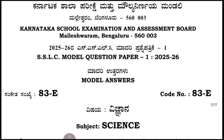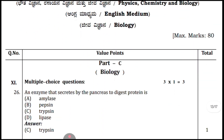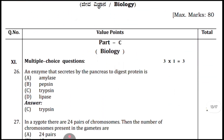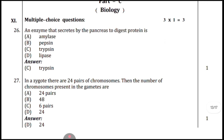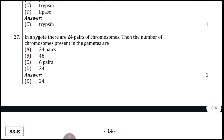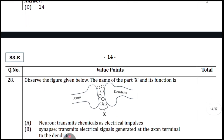Coming to the biology section of the Science question paper 2025-26. Multiple choice: the enzyme secreted by the pancreas to digest protein is trypsin. In a zygote there are 24 pairs of chromosomes; therefore the number of chromosomes present in the gametes is 24.